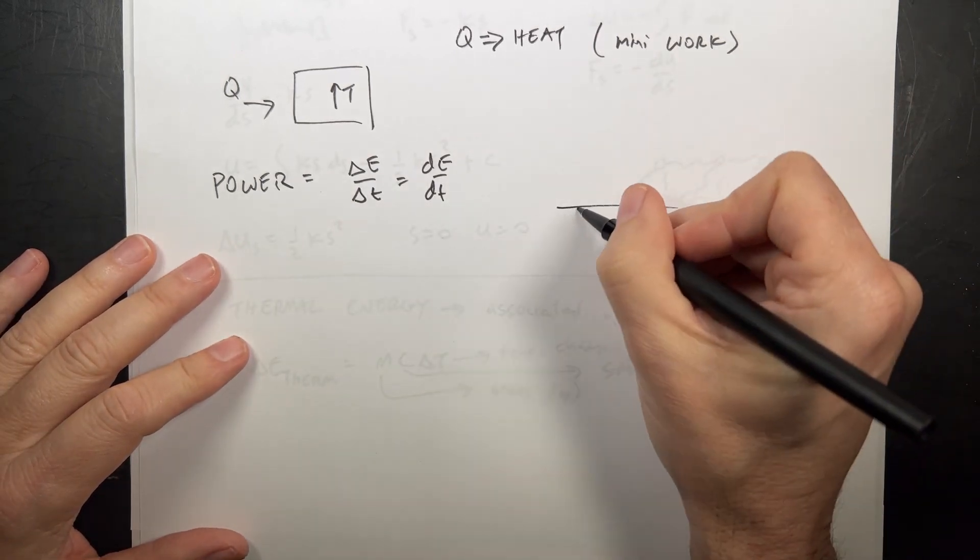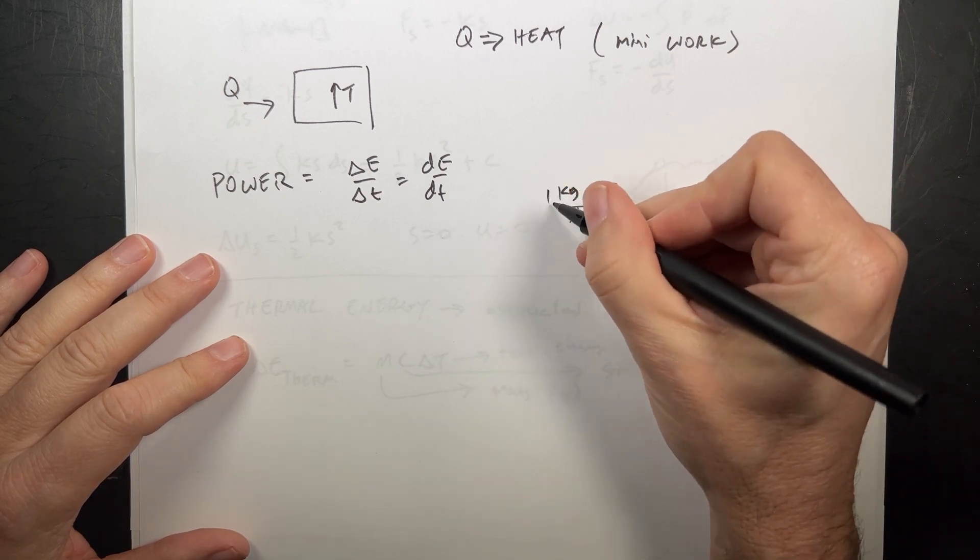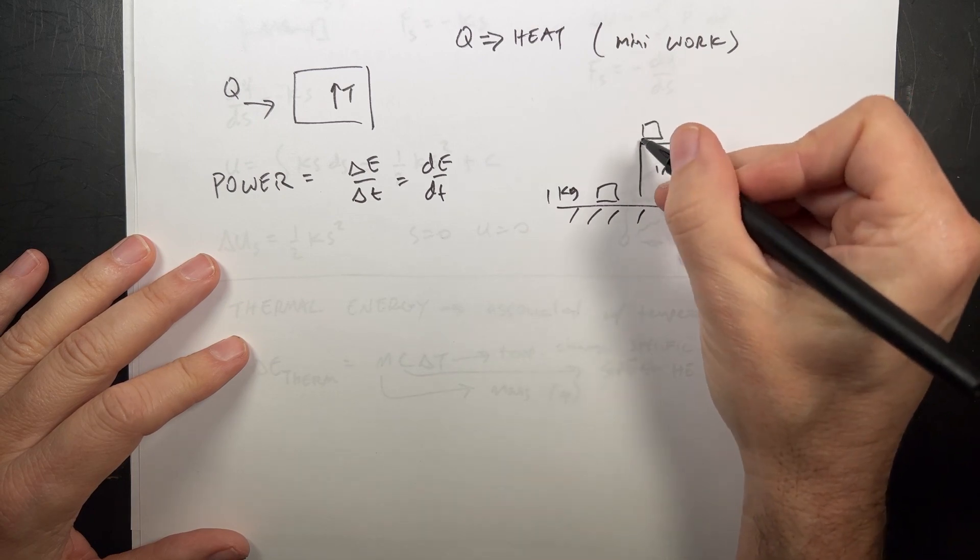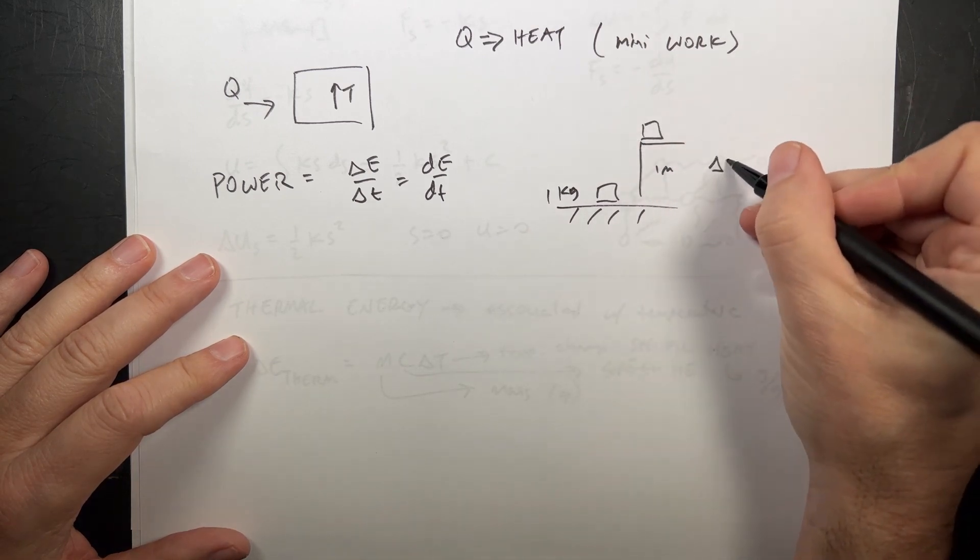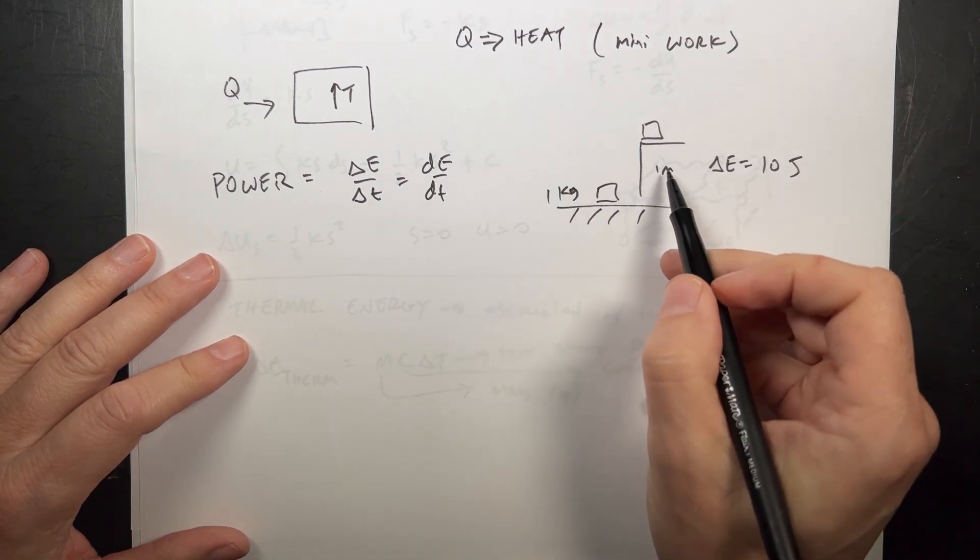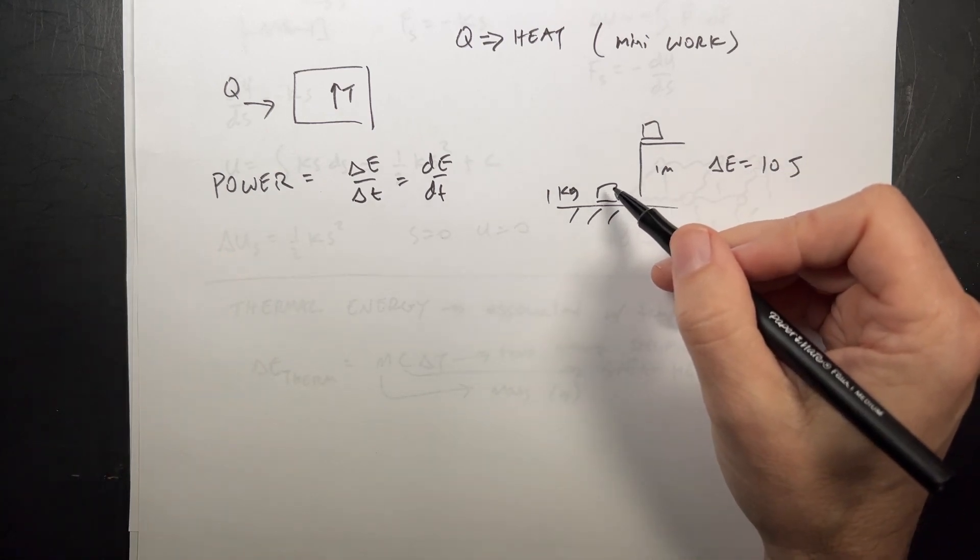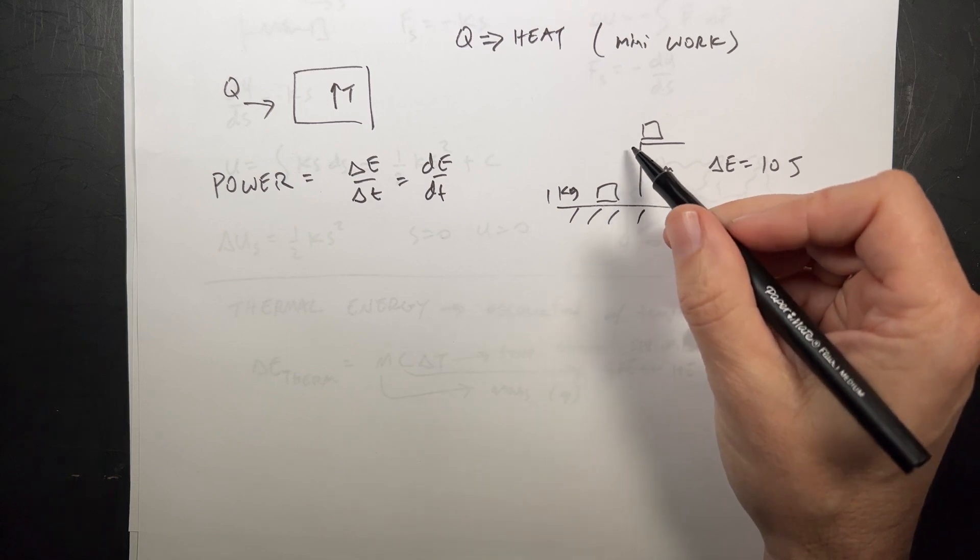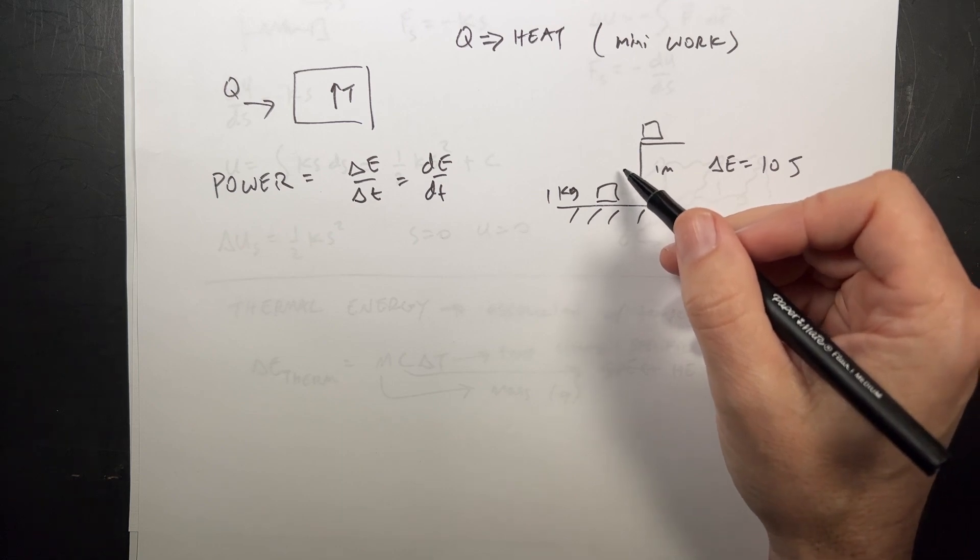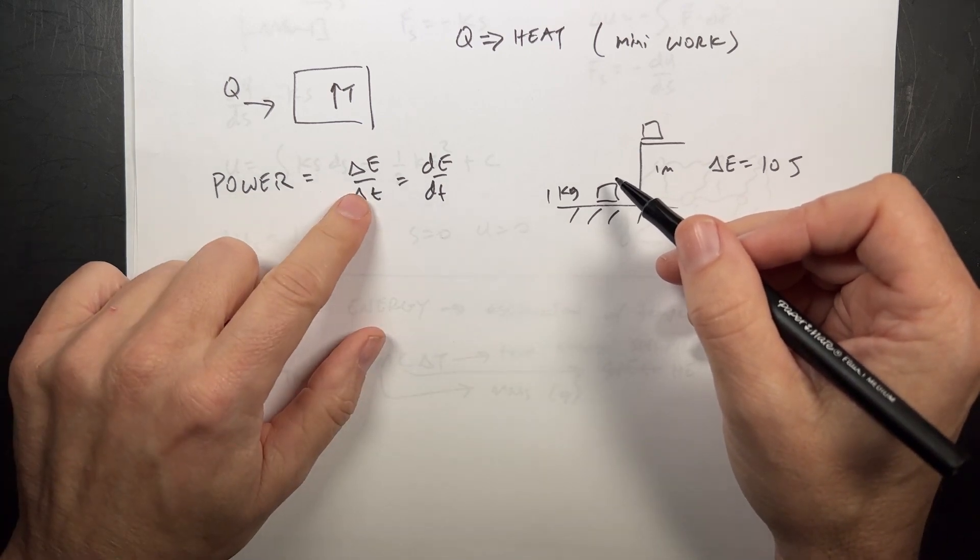Imagine this. I have a block right here, a one kilogram block. I lift it up one meter and put it up here. That would take a change in energy of about 10 joules. One kilogram times one meter times 9.8, so 10 joules. If I do it very slowly, it's much easier than if I do this in a tenth of a second. Even though they have the same change in energy, they'd have different powers because they take different times. Power is the rate of doing that work.